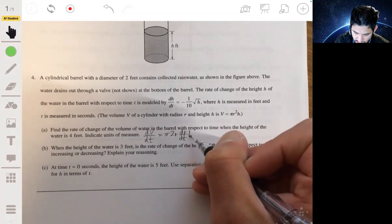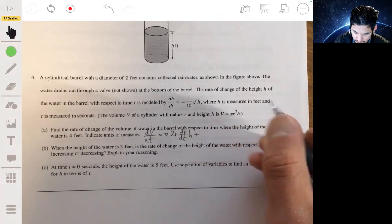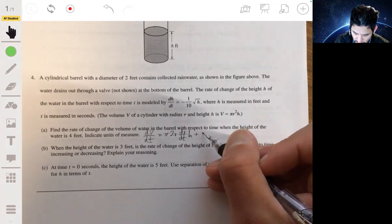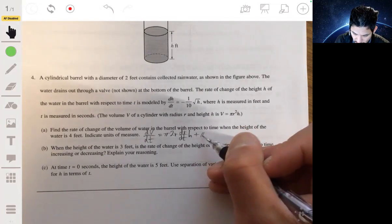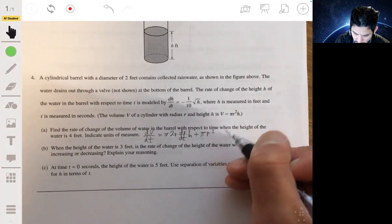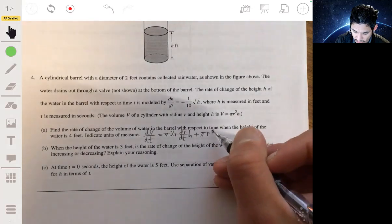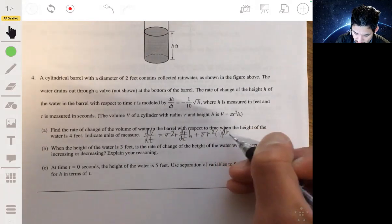leaving h as constant, plus this time leaving r as constant, plus pi times r squared, the derivative of h is just one, so it doesn't really matter, times dh/dt.